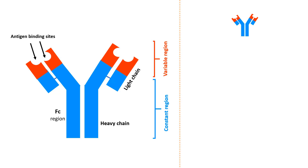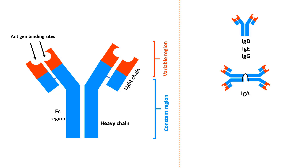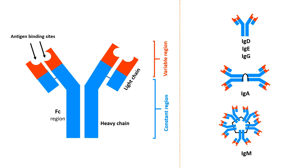The antibody can be a single molecule, such as IgD, IgE, and IgG. Or they can be a couple of molecules connected together, such as IgA antibody. Or a cluster of five antibody molecules connected together, such as IgM antibody.